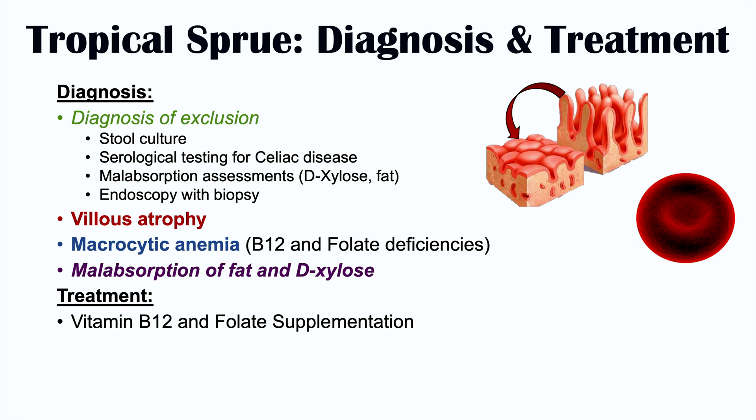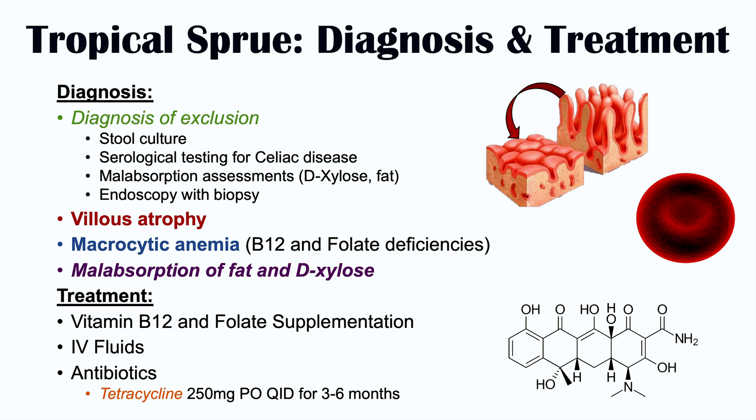Treatment includes vitamin B12 and folate supplementation, IV fluids — because patients lose a lot of fluids from excessive diarrhea — and antibiotics. Tetracycline, often for a long period of time of three to six months, does seem to improve signs and symptoms of tropical sprue. This lends credence to the idea that this is caused by a bacterial infection. So vitamin B12 and folate supplementation, IV fluids, and tetracycline for three to six months is the indicated treatment.